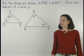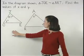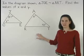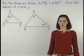In this example, we're given that triangle JOE is similar to triangle ART, and we're asked to find the values of X and Y.